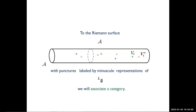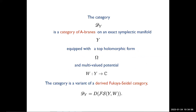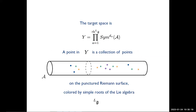To the Riemann surface with punctures labeled by minuscule representations of the Lie algebra, we associate a category. The category will be a category of A-branes on an exact symplectic manifold Y, which is equipped with a top holomorphic form and a multi-valued potential. This category will be a variant of familiar derived Fukaya categories. The target space is a product of symmetric products, one for each node of the Dynkin diagram. A point in Y is a collection of points on our Riemann surface, colored by simple positive roots of the Lie algebra.